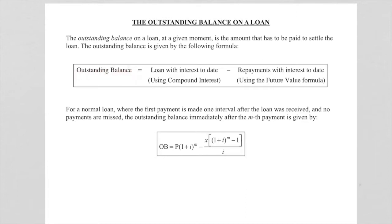To find outstanding balance, we want the loan with interest up to date, that is up to the last payment, and that is where we use compound interest. We subtract from that the repayments with interest to date.